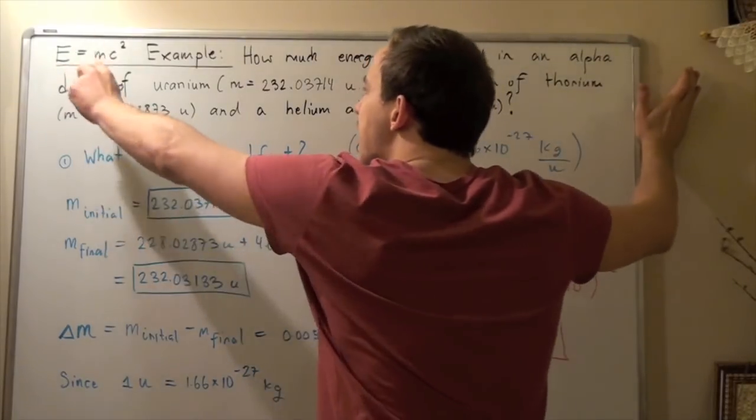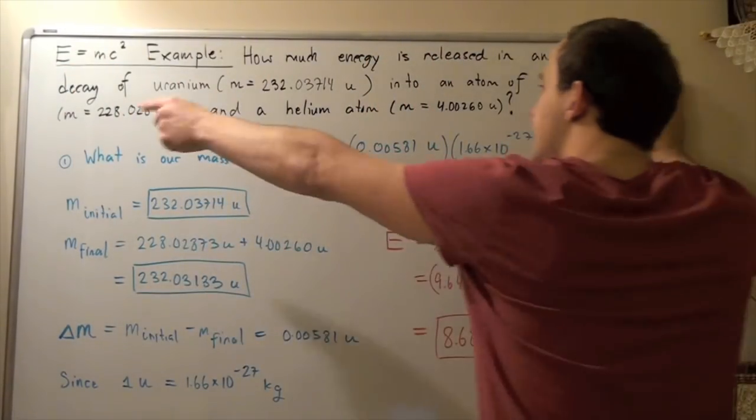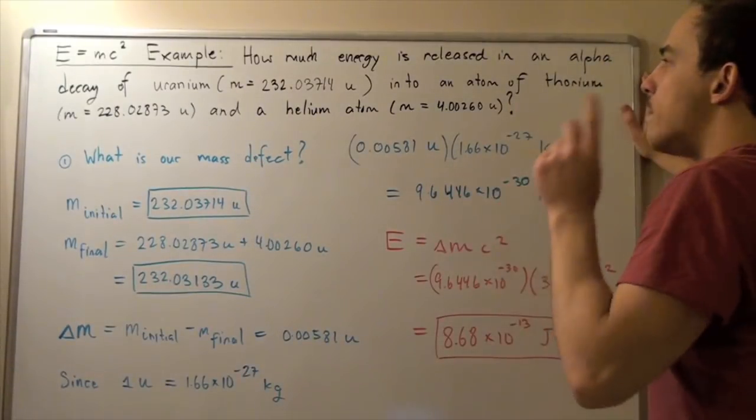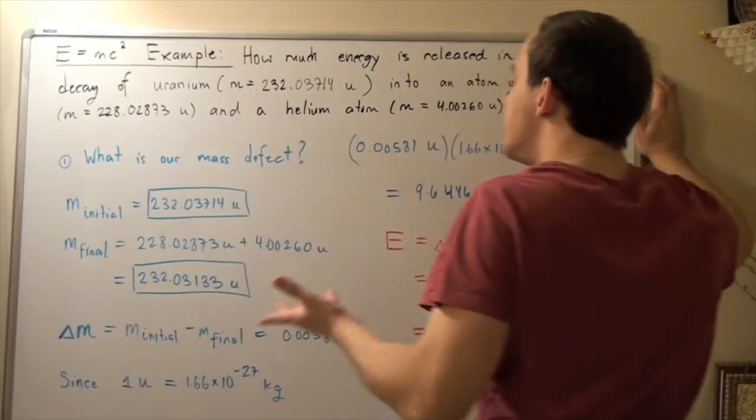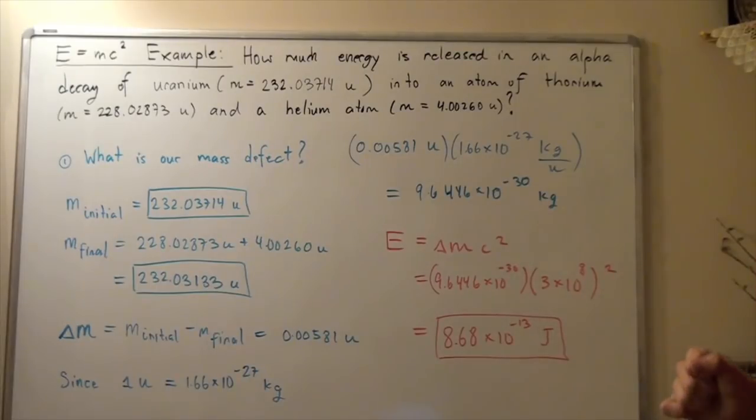So, we use our energy mass equivalent formula, E equals MC squared, remembering that C is the speed of light, 3 times 10 to the 8 meters per second. So, we plug our values in.